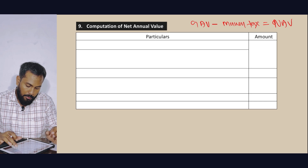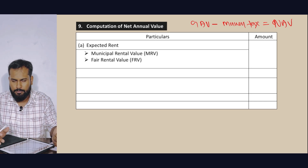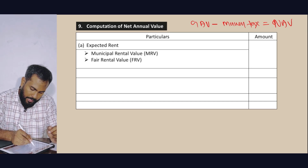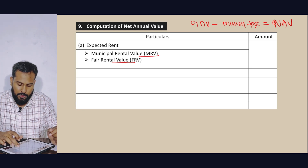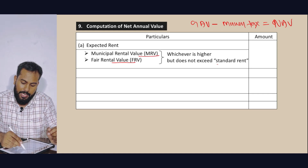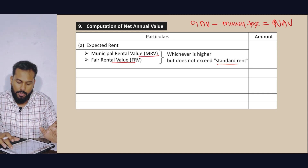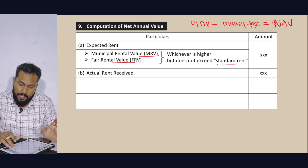We will use the format that is expected. The expected rental value is determined by taking Fair Rental Value and Municipal Rental Value — whichever is higher — but it should not exceed the Standard Rent. Then we also consider the actual rental received.